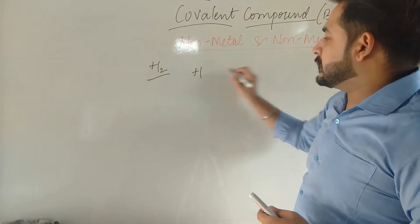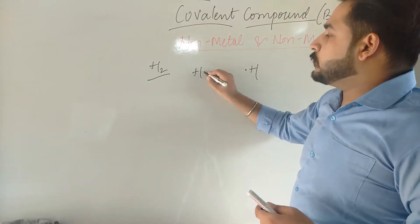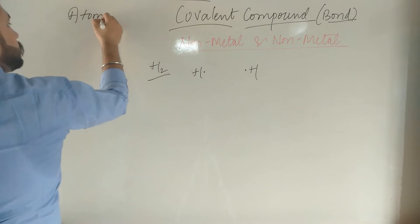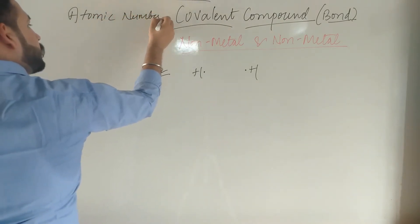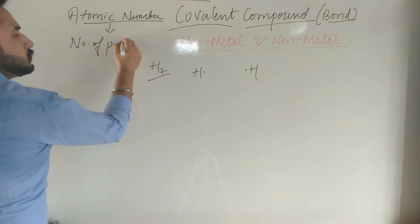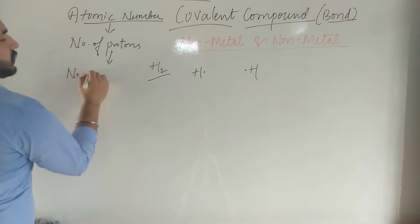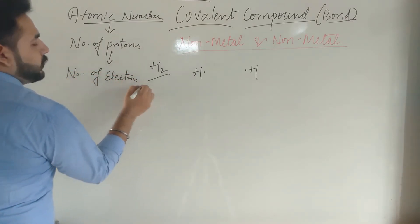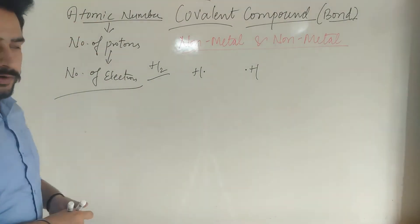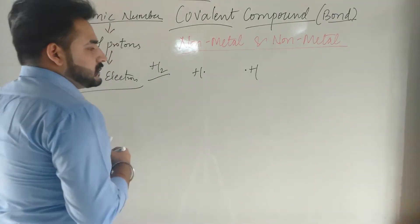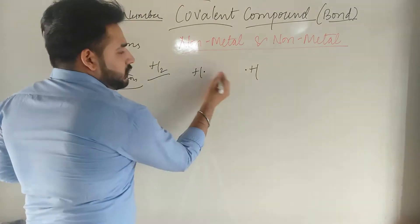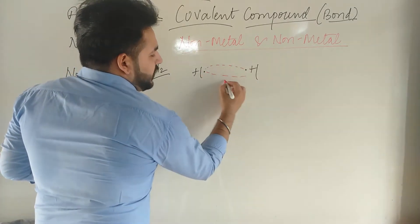Suppose there is one first hydrogen and one second hydrogen. The atomic number of hydrogen is 1. Atomic number equals number of protons, and number of protons equals number of electrons. So hydrogen contains only one electron. The first hydrogen contains only one electron and the second hydrogen also contains one electron. This means mutual sharing of electrons takes place between them.